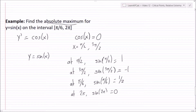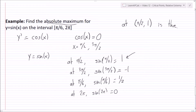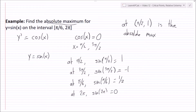At 2 pi, sine of 2 pi equals zero. The question asks for the absolute max, so which value is highest? It's 1 at pi over 2, so (pi over 2, 1) is the absolute max. To summarize: find critical values, plug them into the function, plug in the endpoints, then identify the largest or smallest value depending on whether you want the absolute max or min.